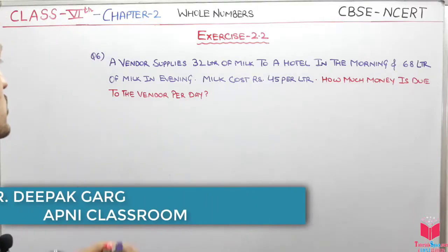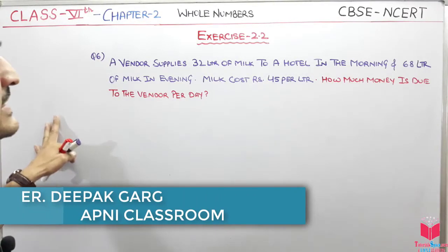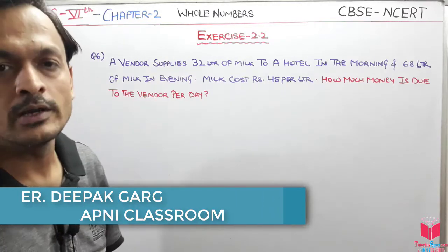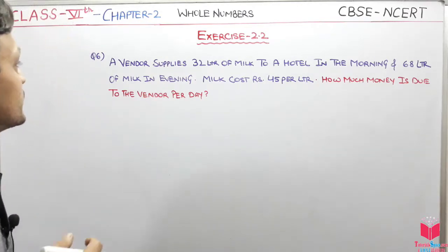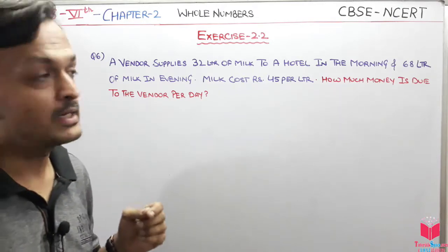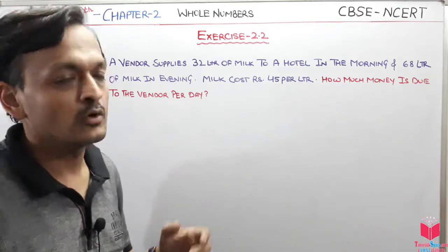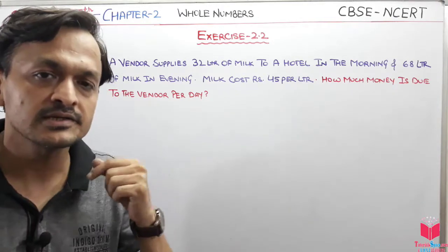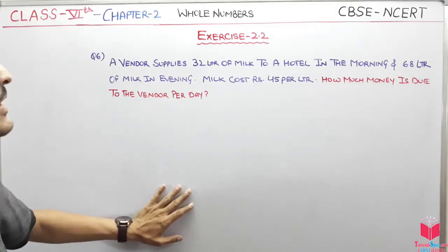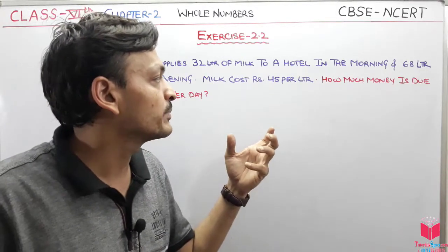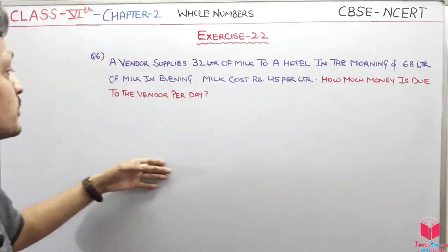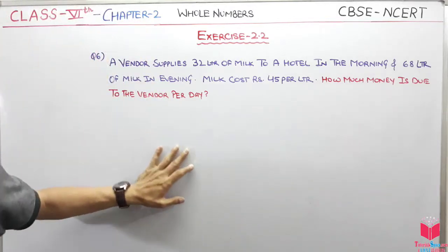Hello guys, let's do question number 6, exercise 2.2, which is from whole numbers. The question is that a vendor supplies 32 liters of milk to a hotel in the morning and 68 liters of milk in the evening. The milk cost is 45 rupees per liter. How much money is due to the vendor per day?